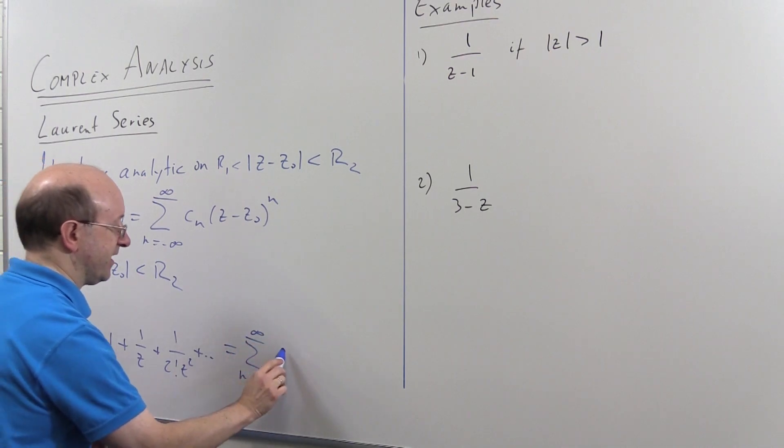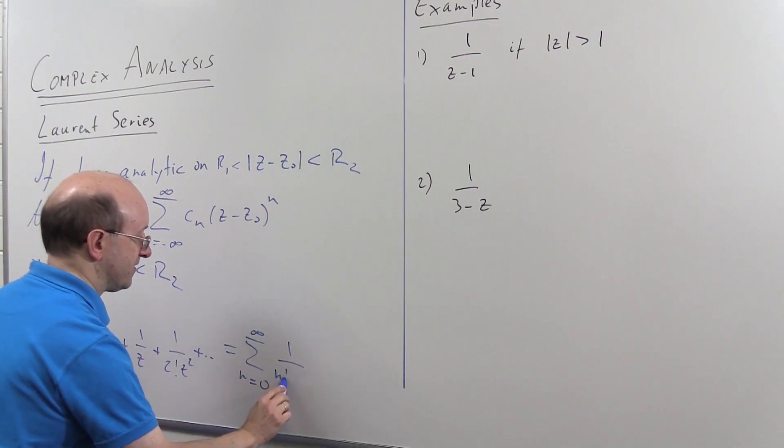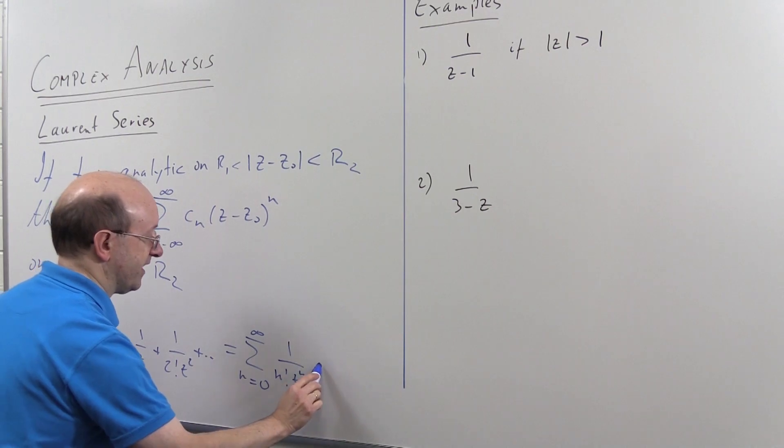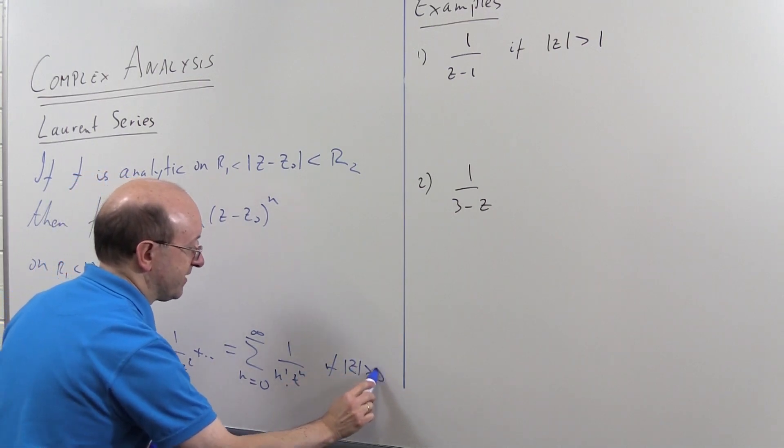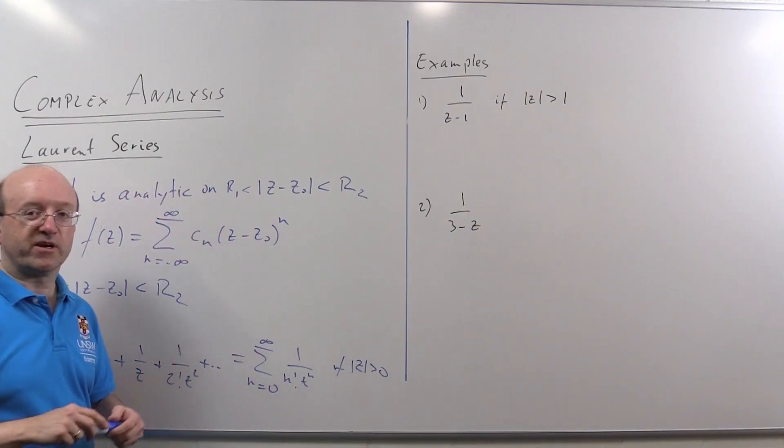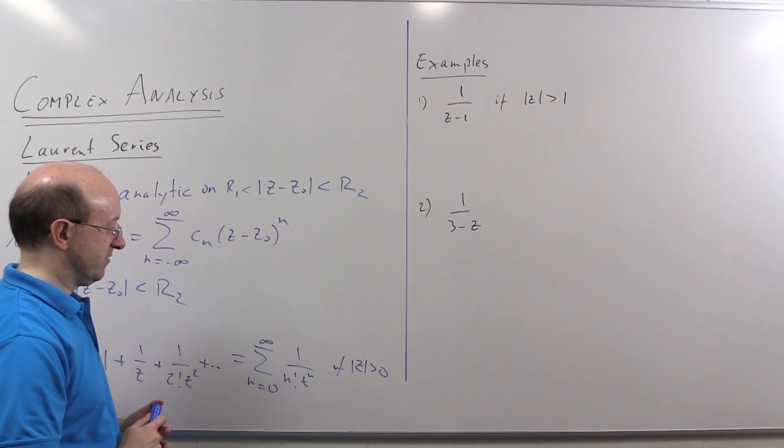Sum from n equals 0 to infinity of 1 upon n factorial z to the minus n if |z| is bigger than zero, or I could have just written that as z not equal to zero.